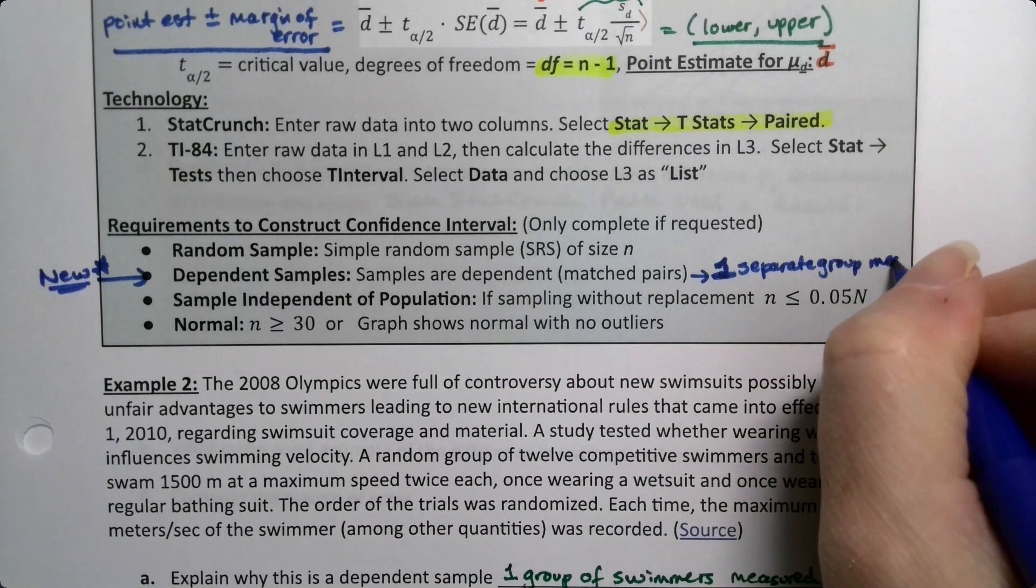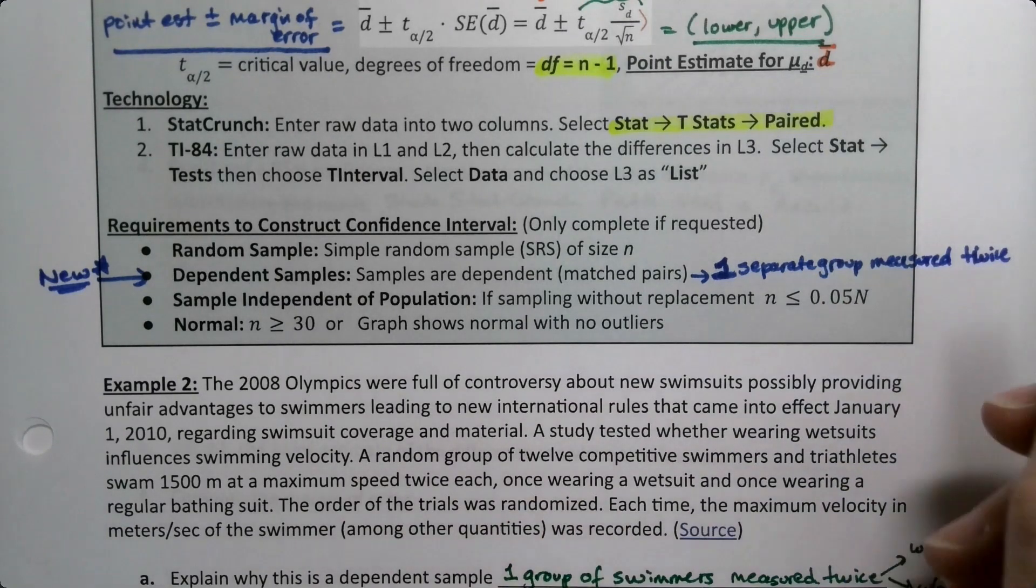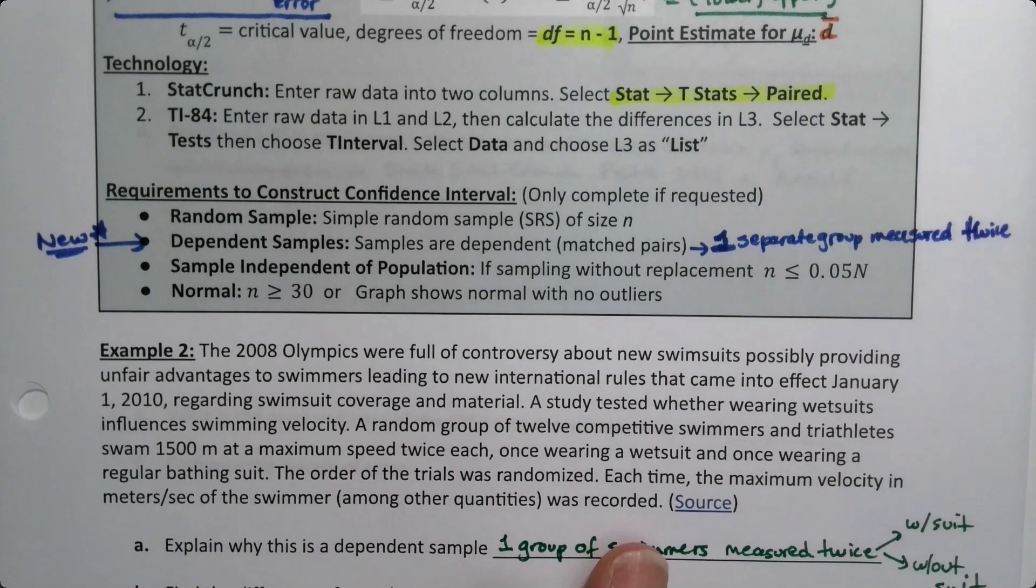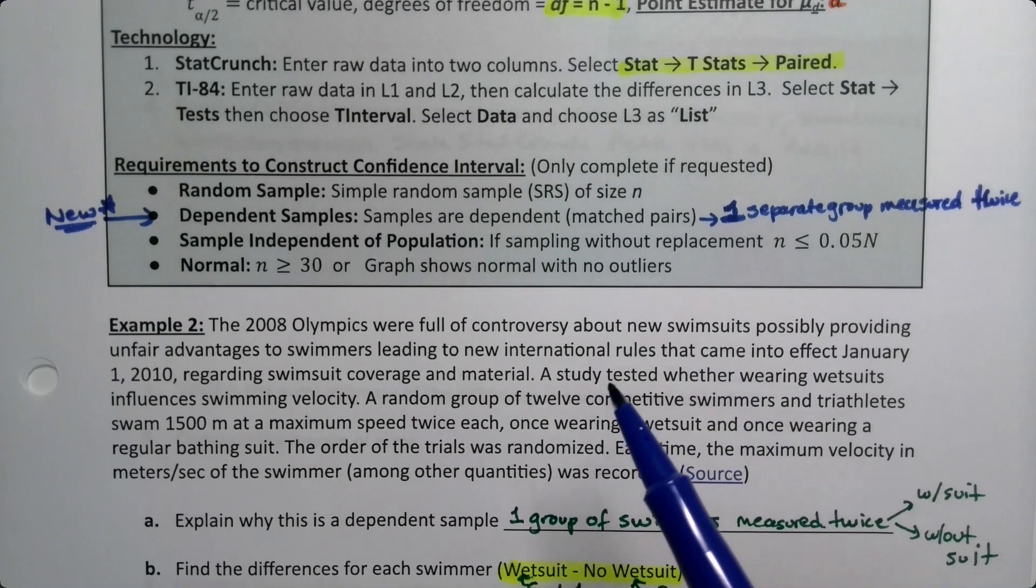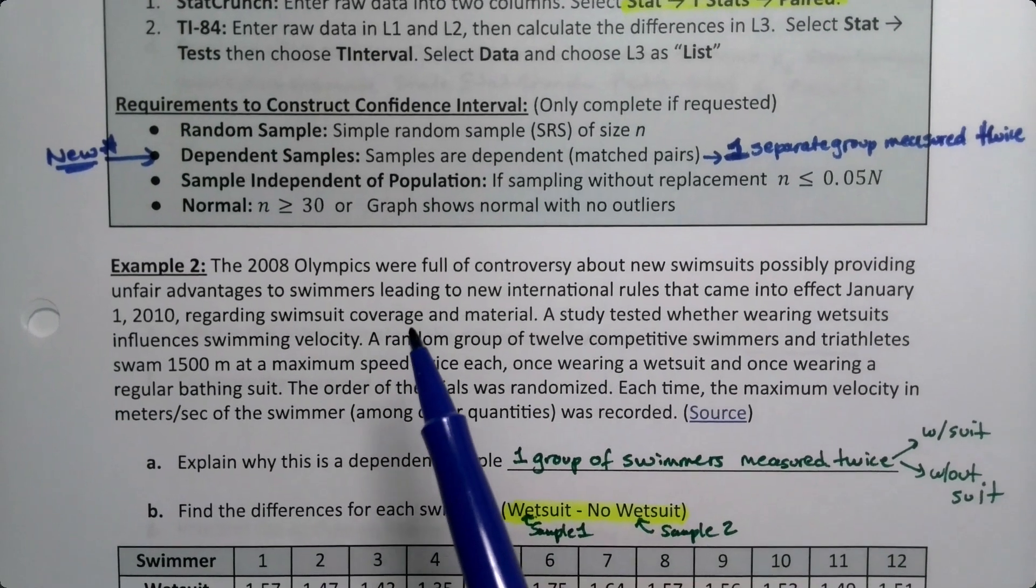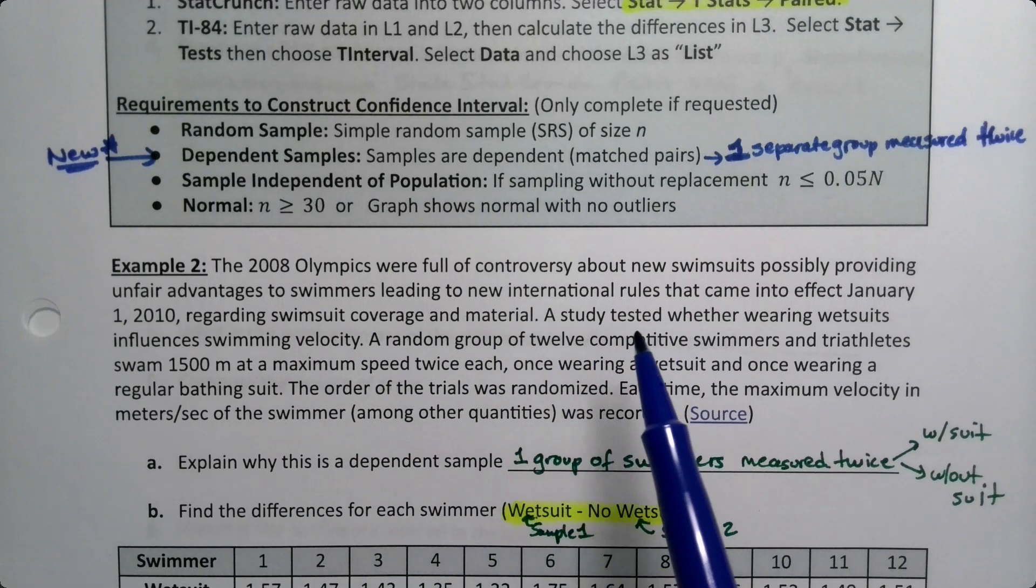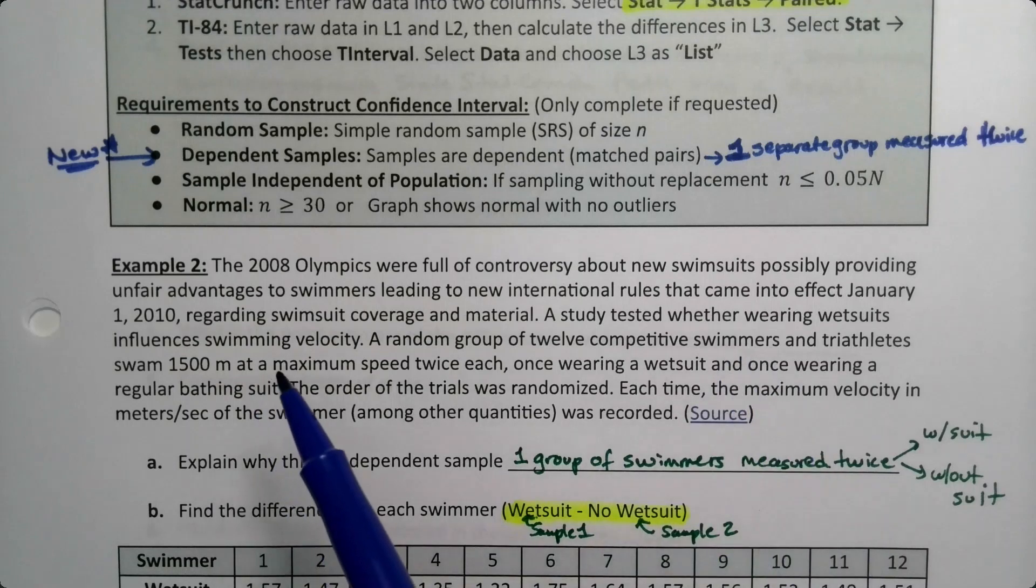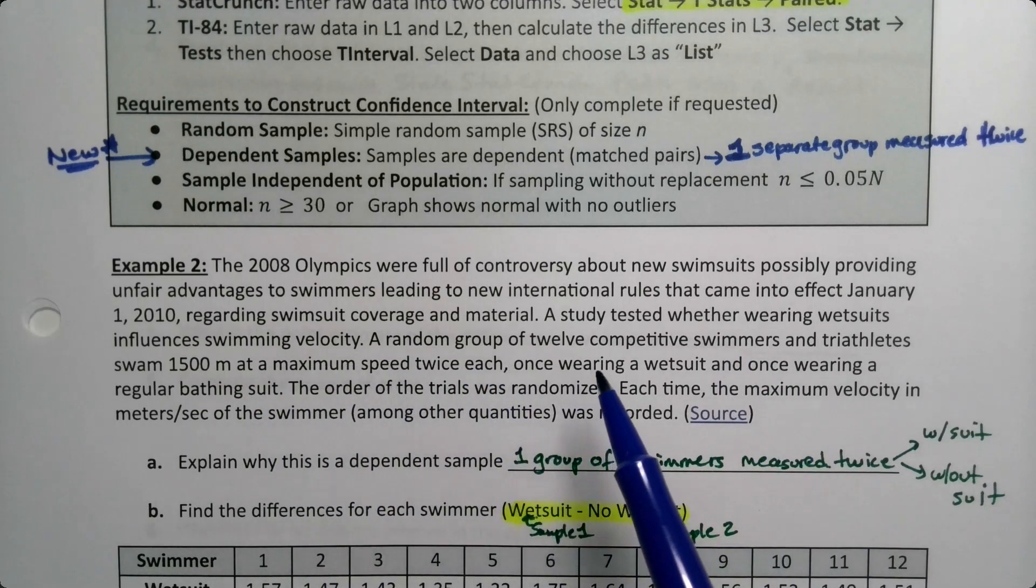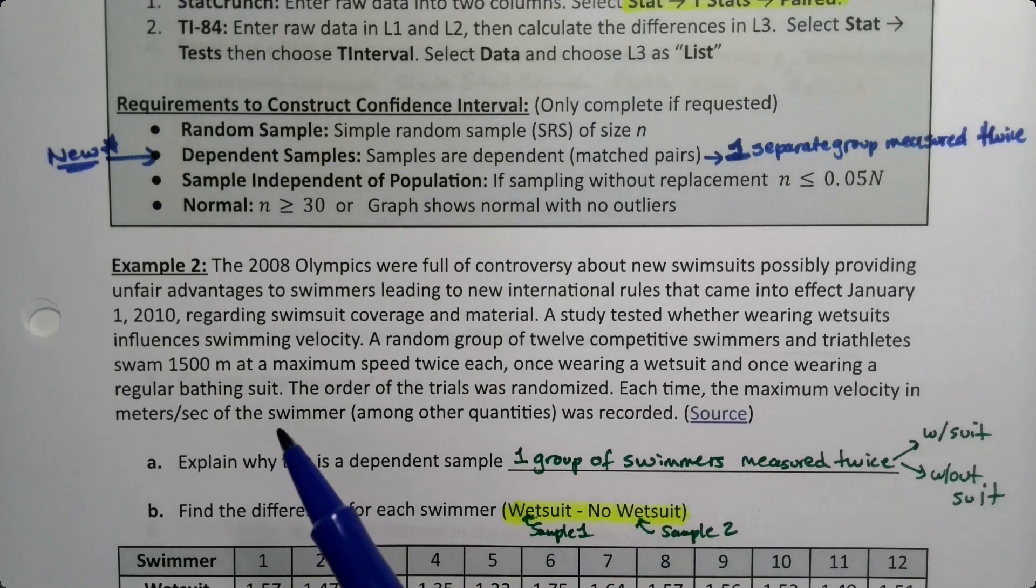In 2008 there was a lot of controversy in that particular Olympics about the swimsuits that people were wearing and whether the swimsuits gave people an unfair advantage. They created new international rules that came into effect January 1st 2010 regarding swimsuit coverage. A study tested whether wearing wetsuits influences swimming velocity. A random group of 12 competitive swimmers and triathletes swam 1500 meters at a maximum speed twice each, once wearing a wetsuit and once wearing a regular bathing suit. The order of the trials was randomized, and each time the velocity in meters per second of the swimmer was recorded.